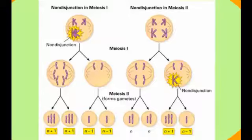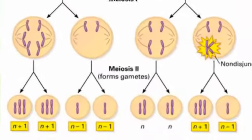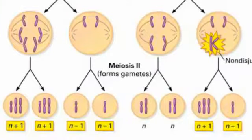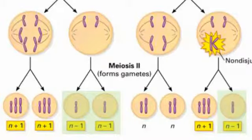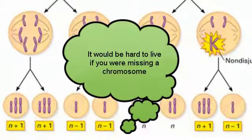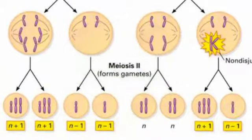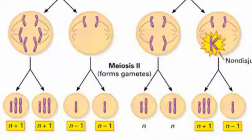You just finished watching my pipe cleaner demonstration of non-disjunction in meiosis I and meiosis II. As you can see, it causes some gametes to have more chromosomes than normal and some to have fewer chromosomes than normal. There are certain disorders that happen when this occurs. The majority of the time the person doesn't survive — the mother's body aborts the baby before they're even born. But there are a few cases where the person can still survive.